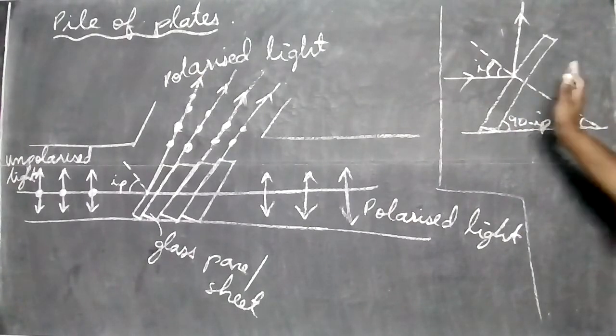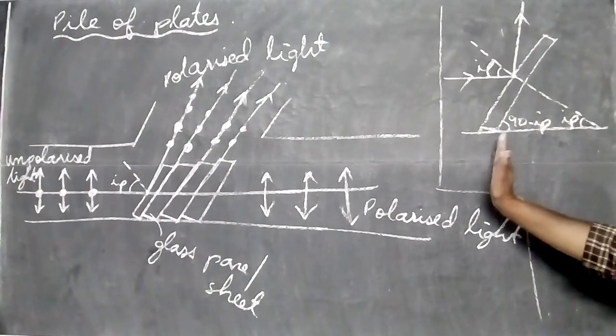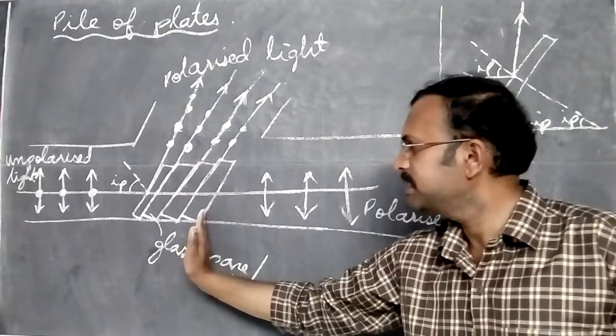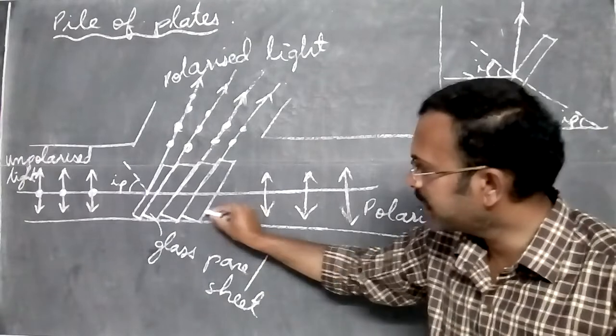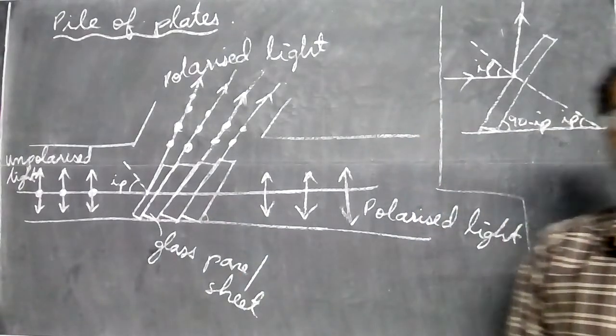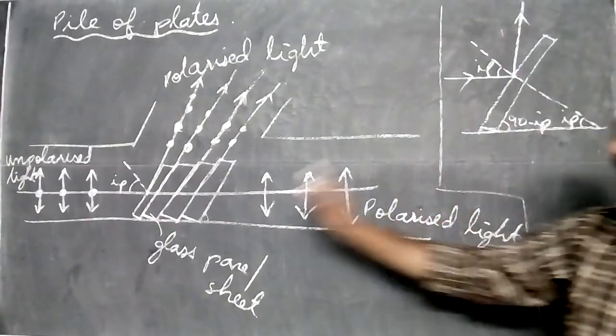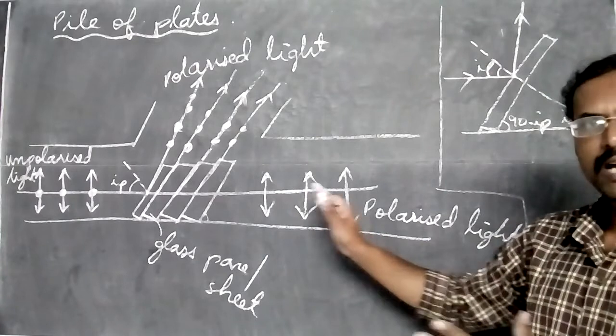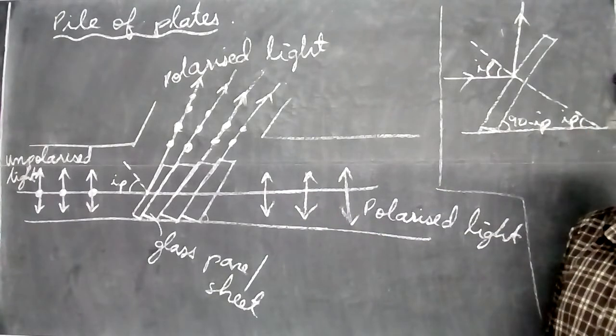The glass pane is kept at 90 minus IP. This angle will be 90 minus IP, and this angle will be 90 minus IP. So if you keep it like this way with a pile of plates, a lot of glass panes, you can see that light will be polarized.